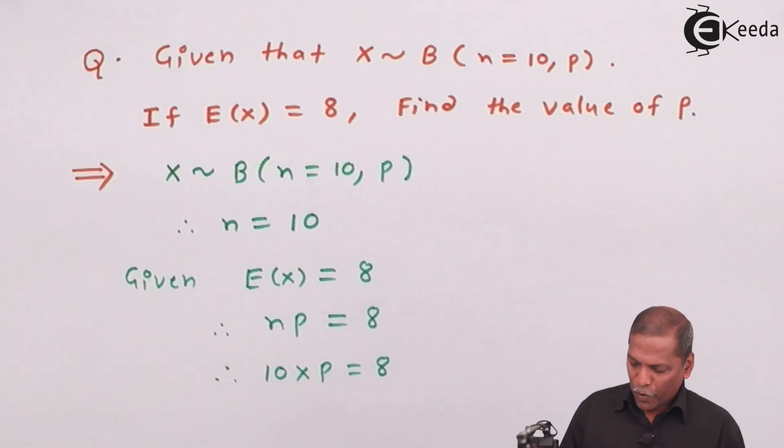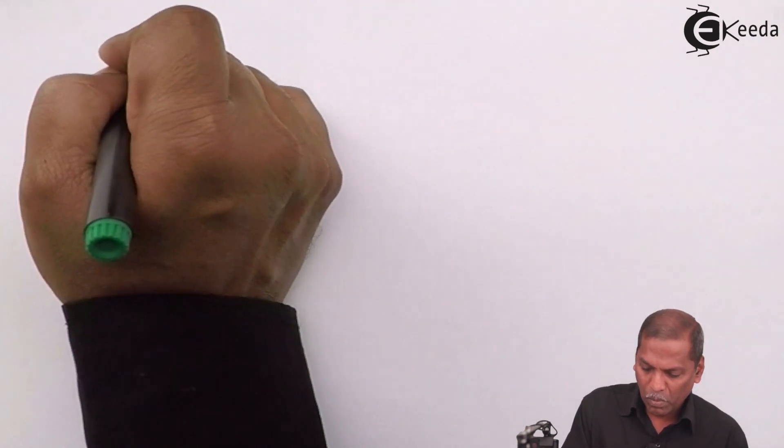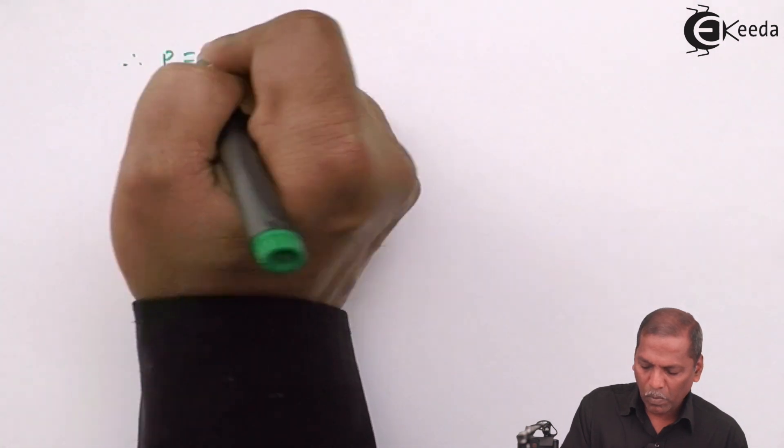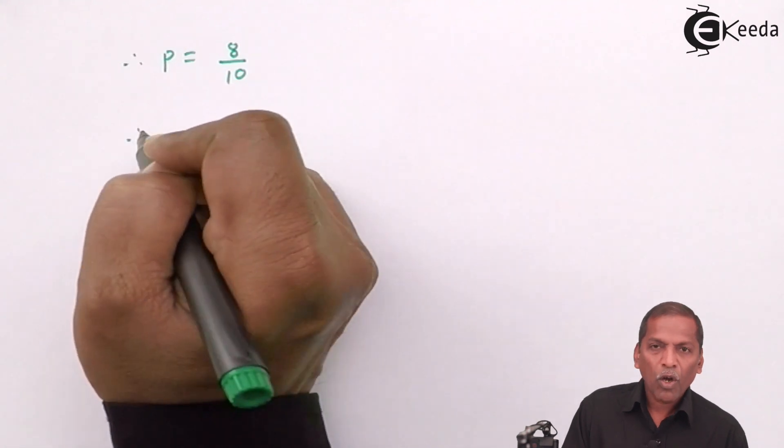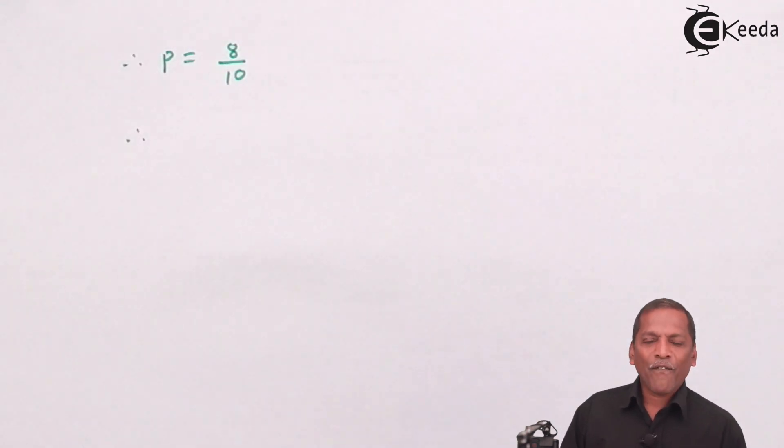And therefore, P is equal to 8 upon 10. On cancellation, finally we get P is equal to 0.8.